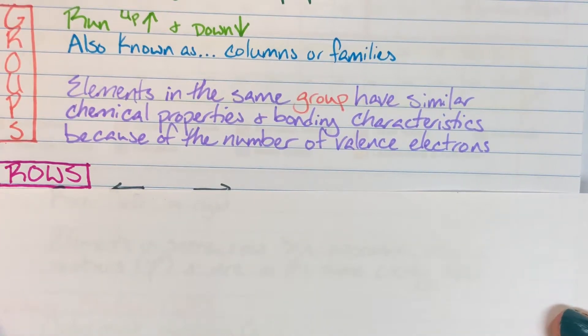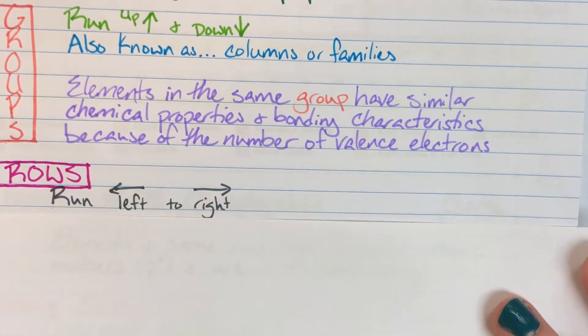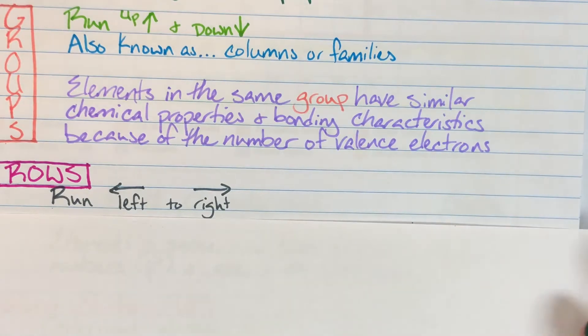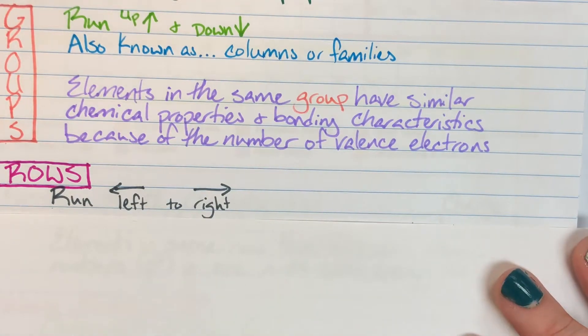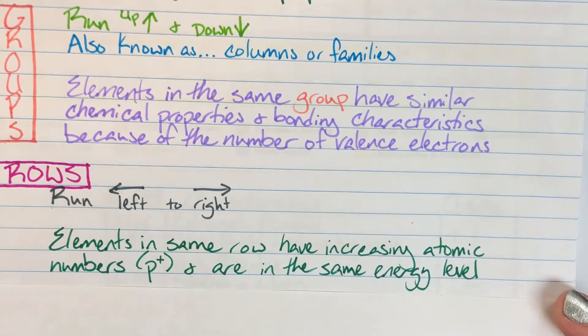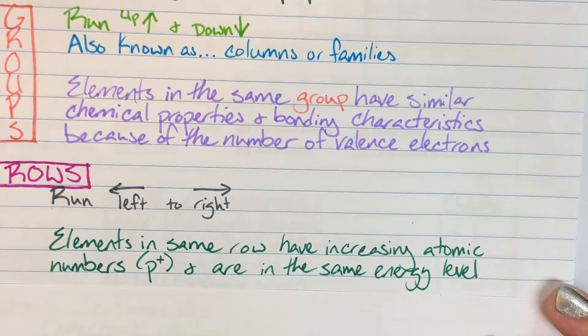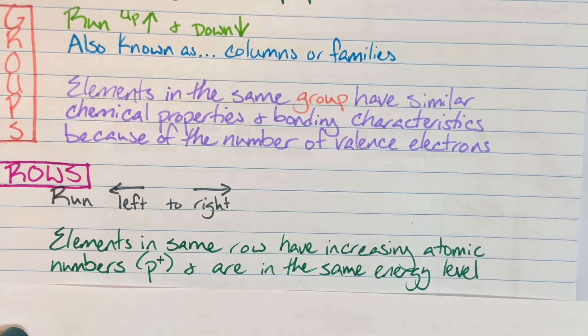So we've talked about that vertical organization, our groups, and now we're going to talk about that horizontal organization and our rows. Our rows run left to right and elements within the same row have increasing atomic numbers and are in the same energy level. Meaning they have similar amounts of energy for their latest electrons. But it's easy to figure out which comes next on our rows because we're just increasing the proton count by one.